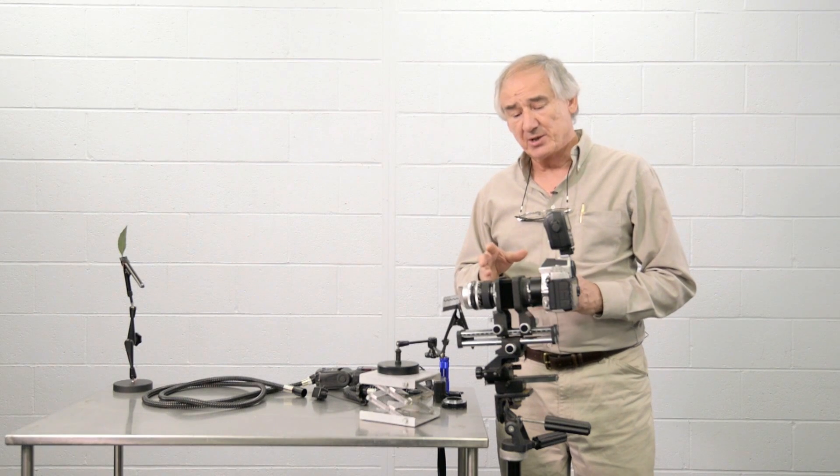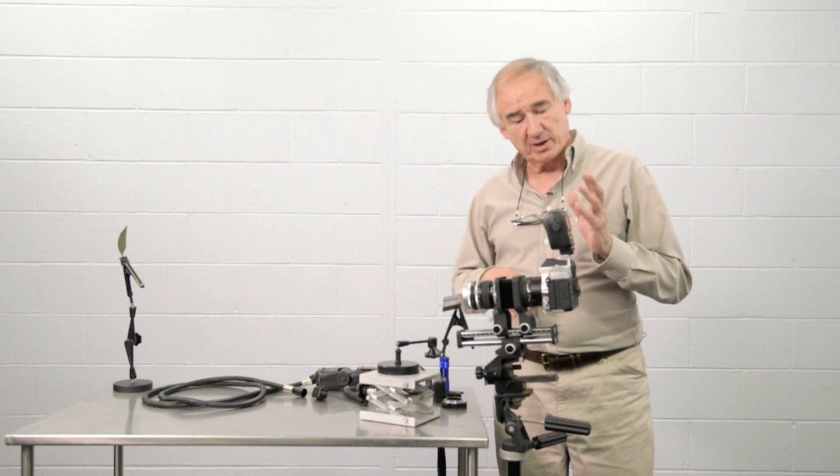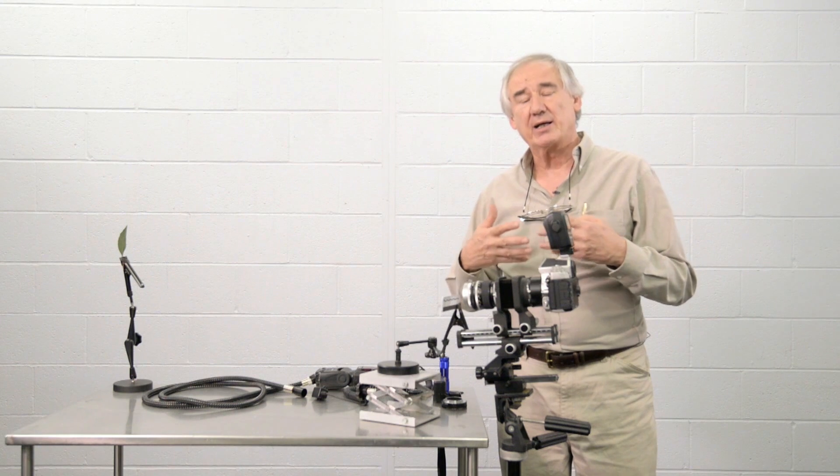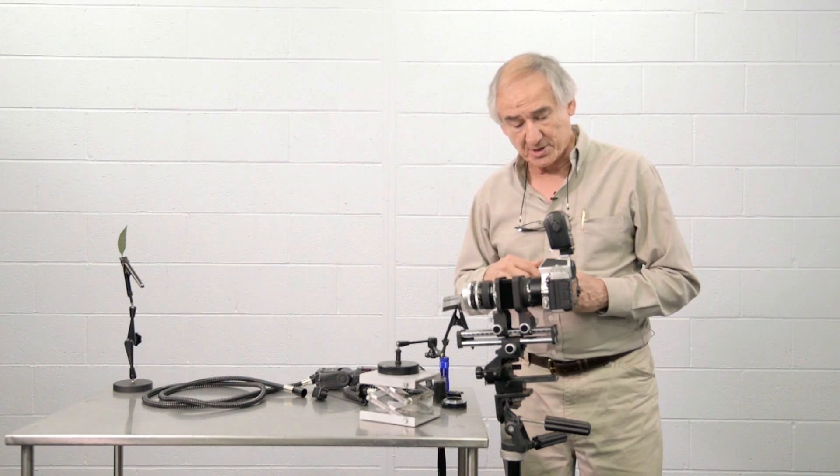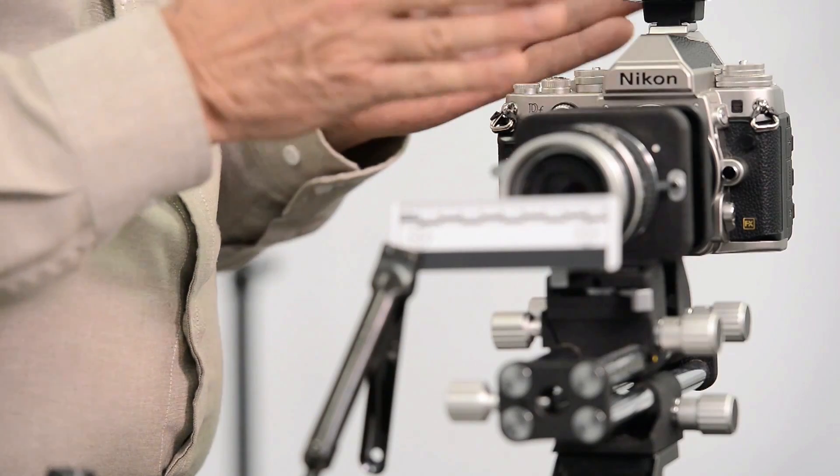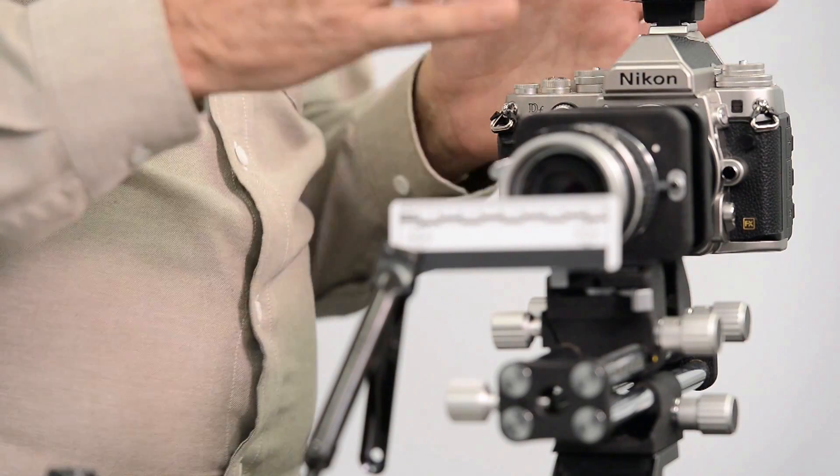Electronics have really added to the ability of a camera and a flash unit to talk to each other and actually determine the exposure by itself. And I'll show you a couple of very interesting ways to do this. But first, I'll explain very briefly what you're looking at here.